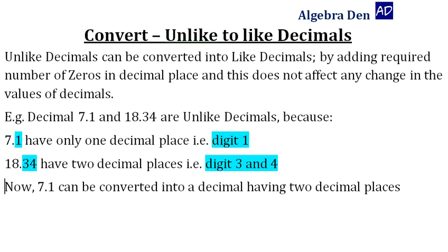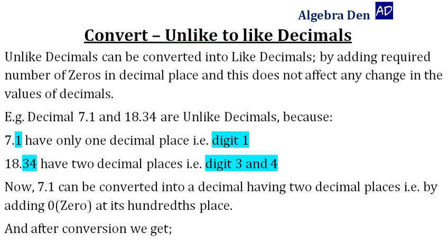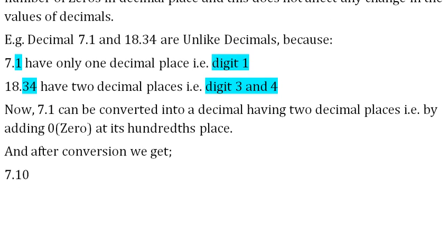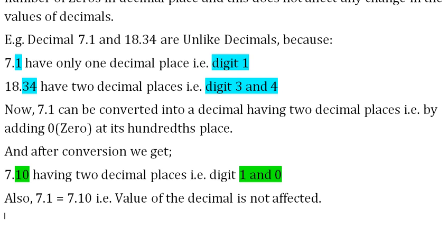Now, 7.1 can be converted into a decimal having two decimal places by adding 0 at its hundredths place. After the conversion, we get 7.10 having two decimal places, that is digits 1 and 0.